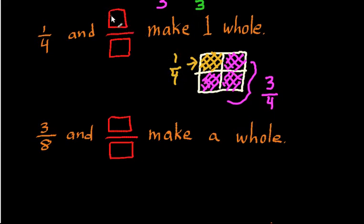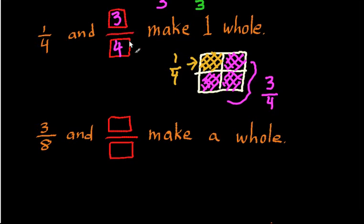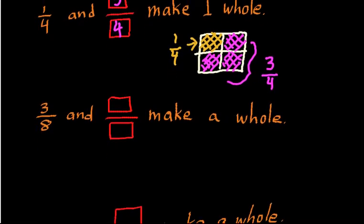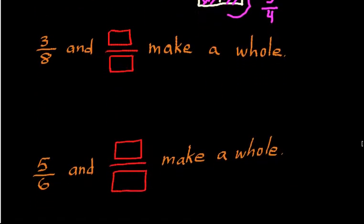If you have one out of four and three out of four, you get four out of four. Put differently, if I took a square and divided it up into four pieces that are all equal size, and I gave you all those four pieces, you would be able to reconstruct the whole square. So if I gave you one piece initially, I would need to give you three more pieces in order for you to get to one whole. I'm going to keep doing problems — I think this is starting to make sense, but I'm going to do a couple more until it really does.